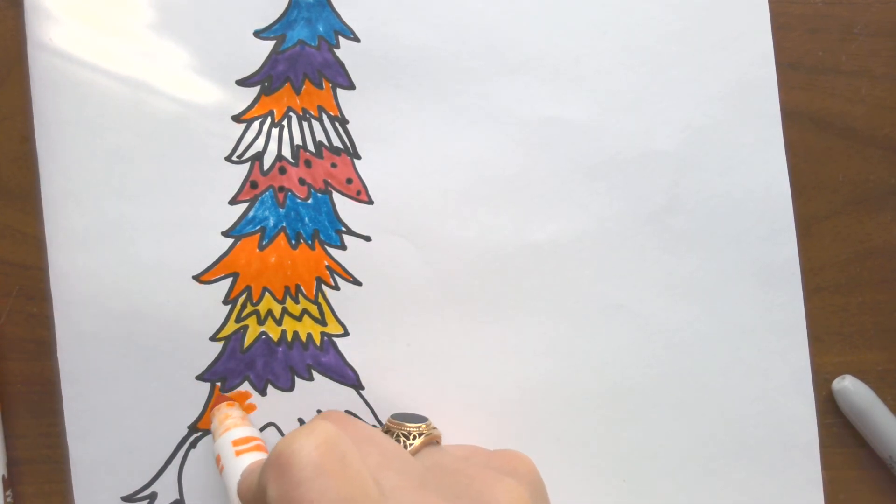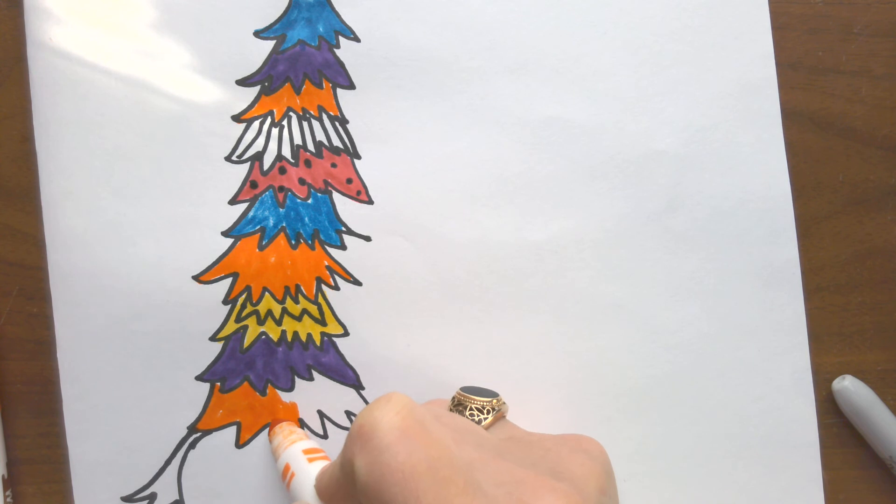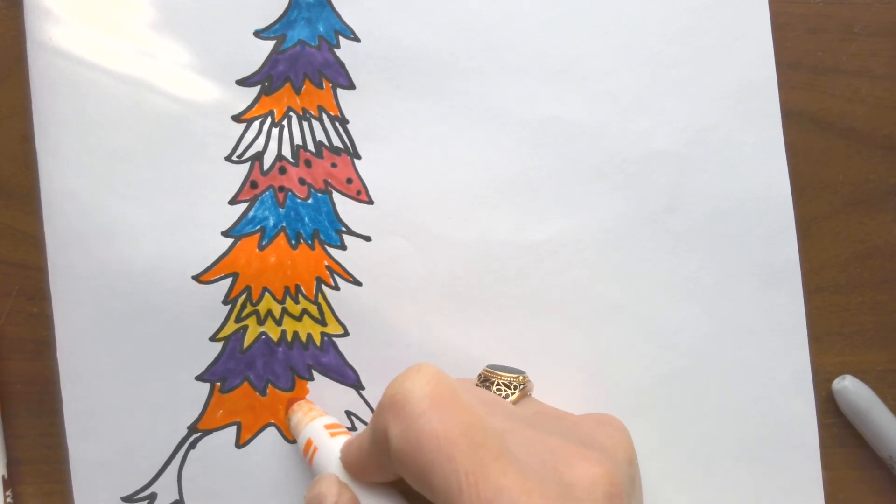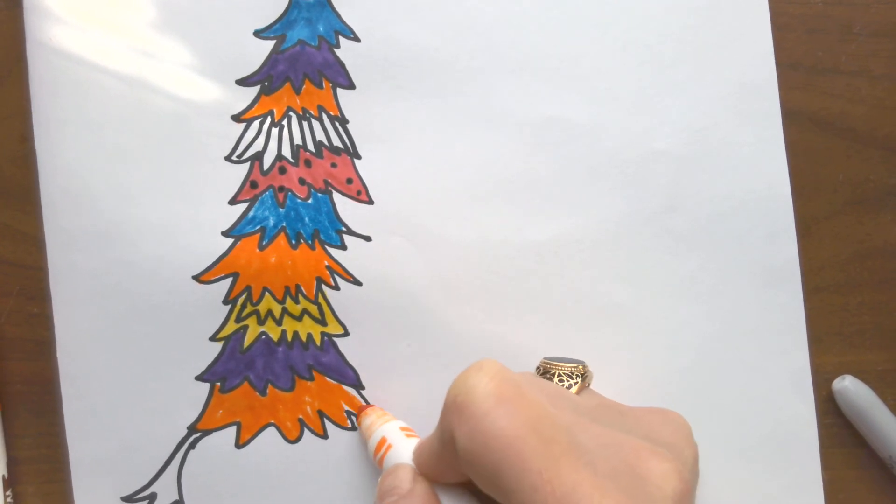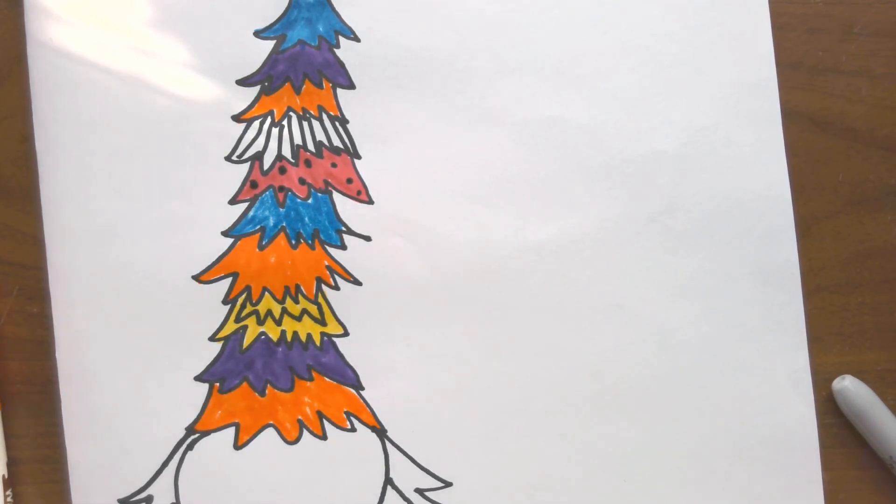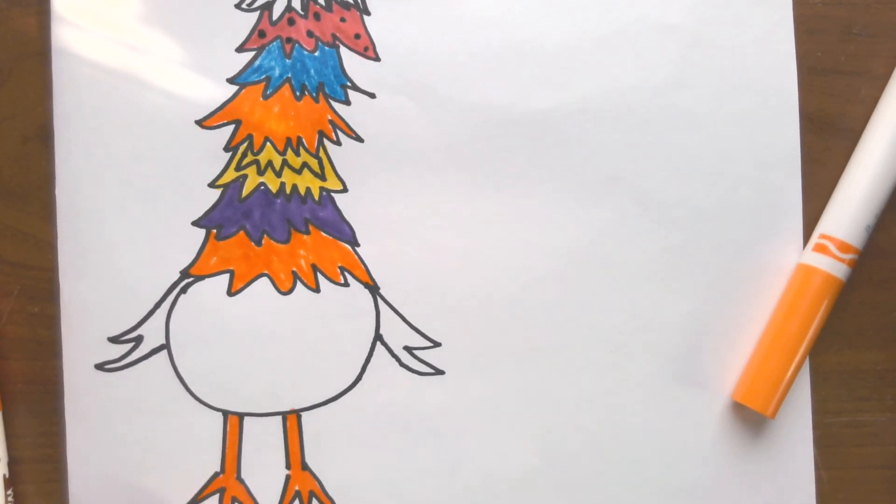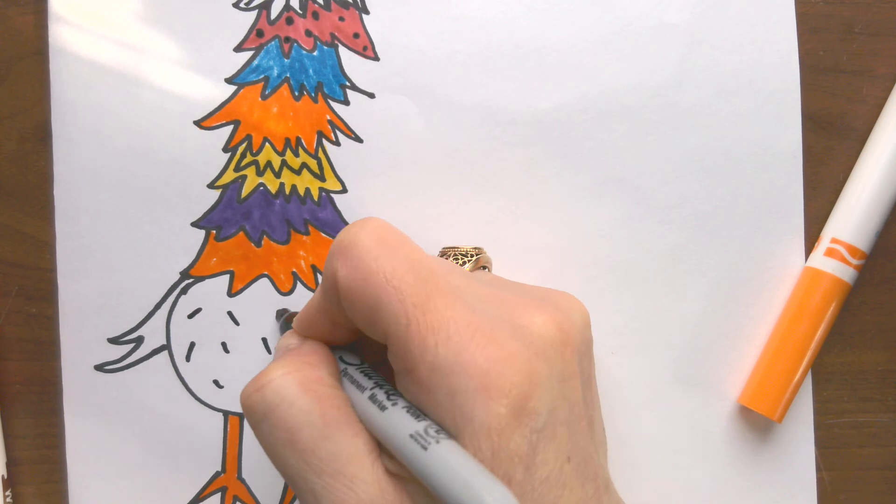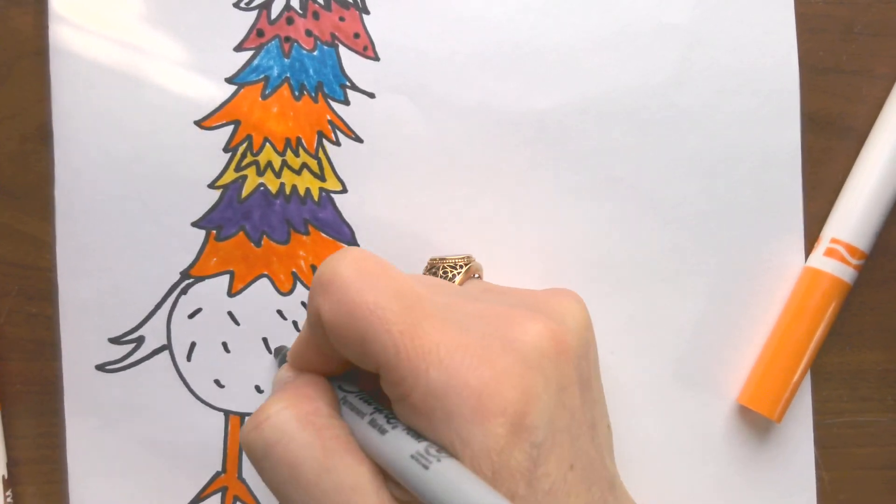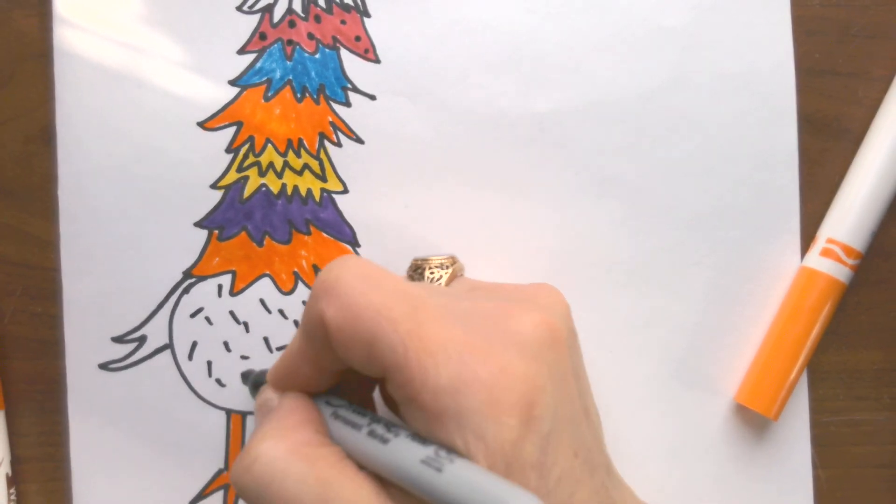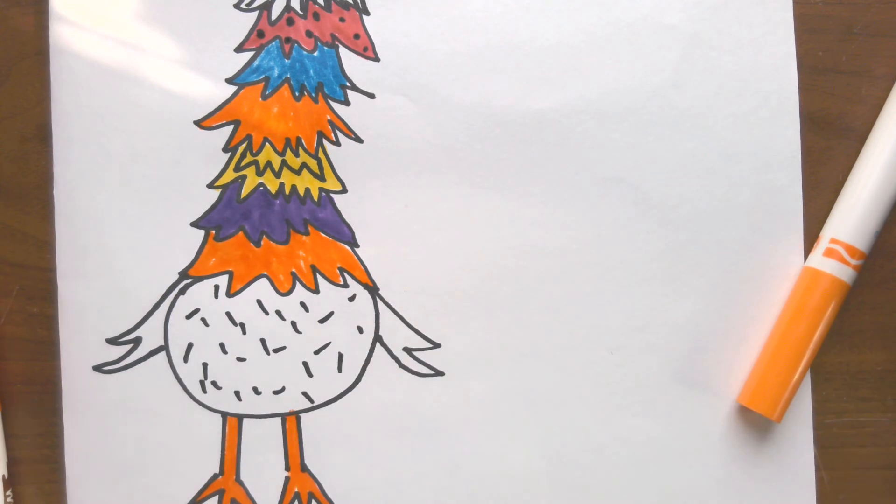For the stomach, I think we'll just put some lines every which way to represent some feathers. Some students did a spiral, so there's no right or wrong - you can do both if you want. I'm just going to go ahead for the stomach area and draw some little lines every which way.